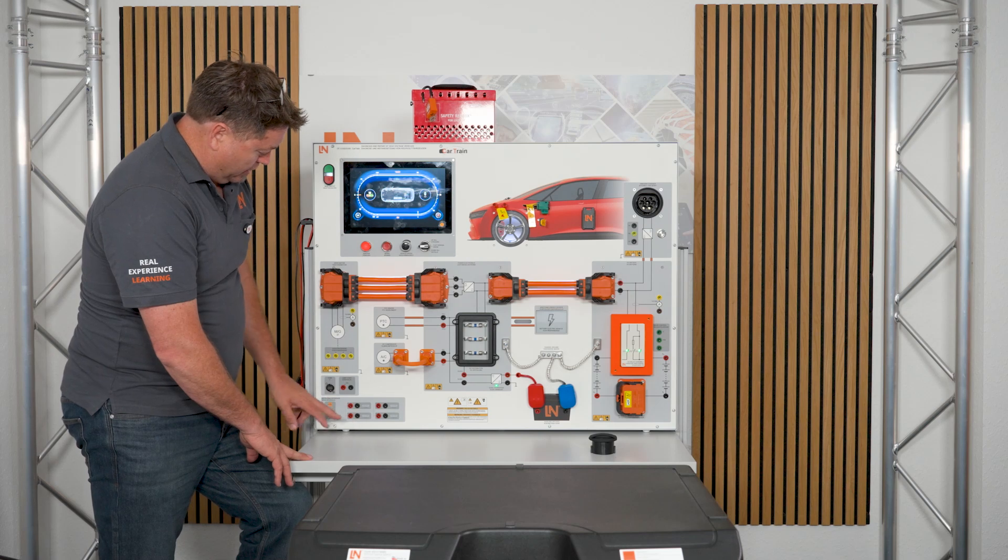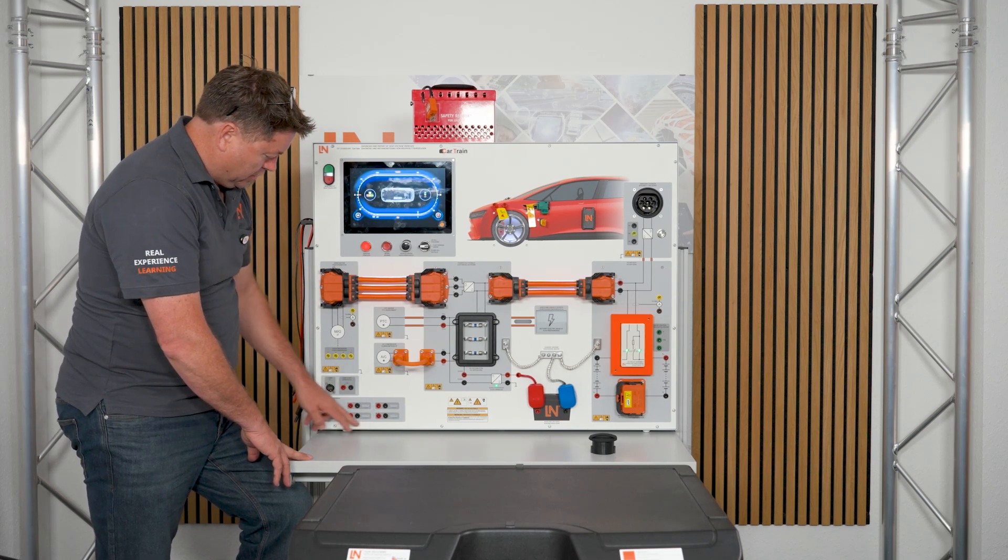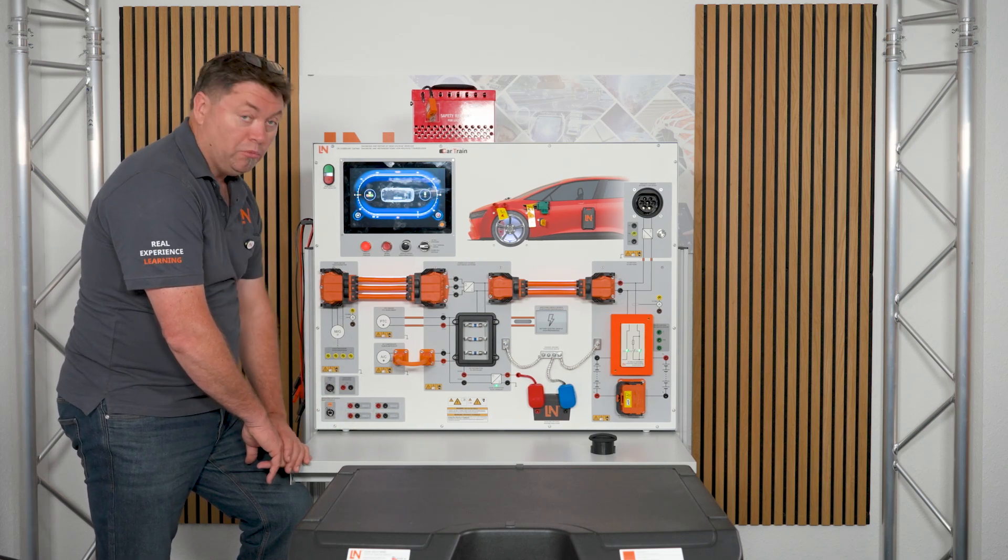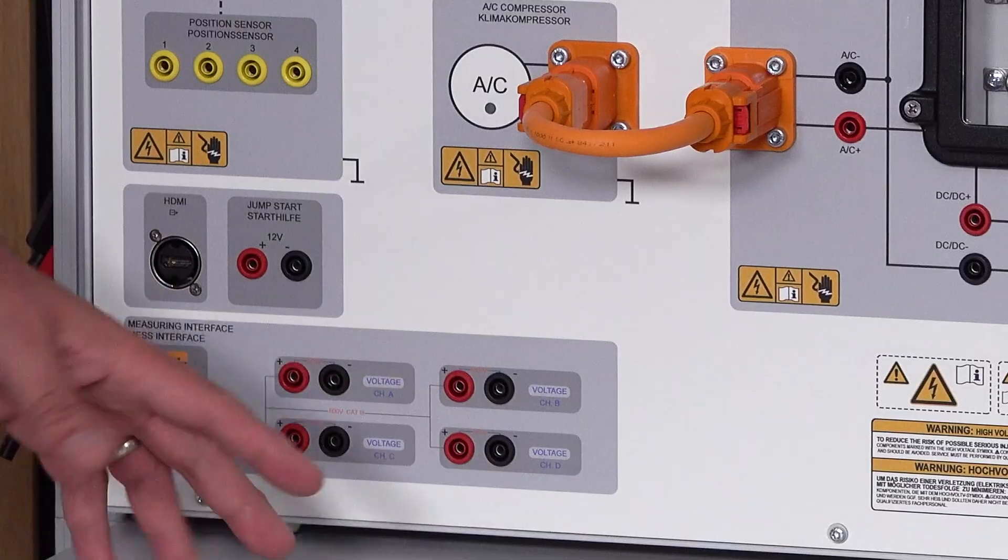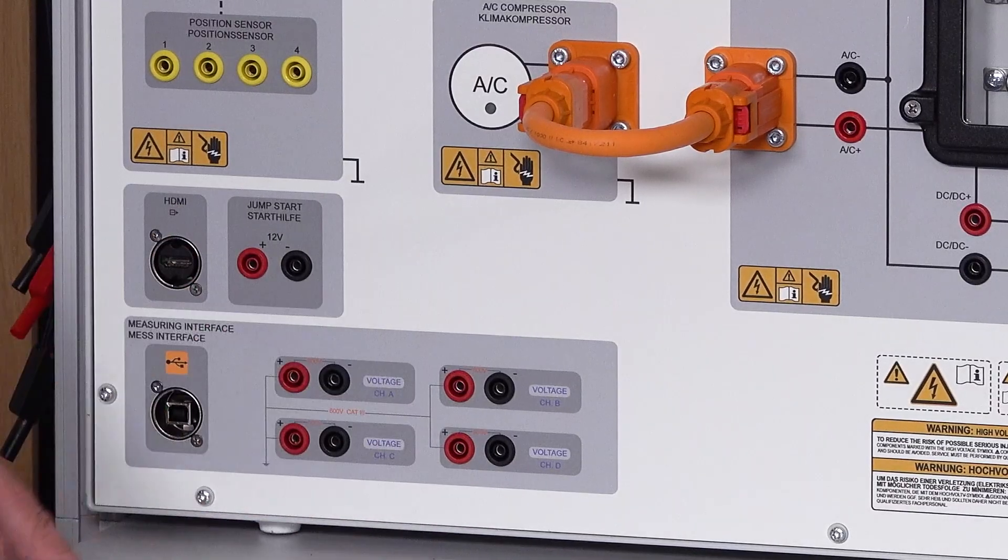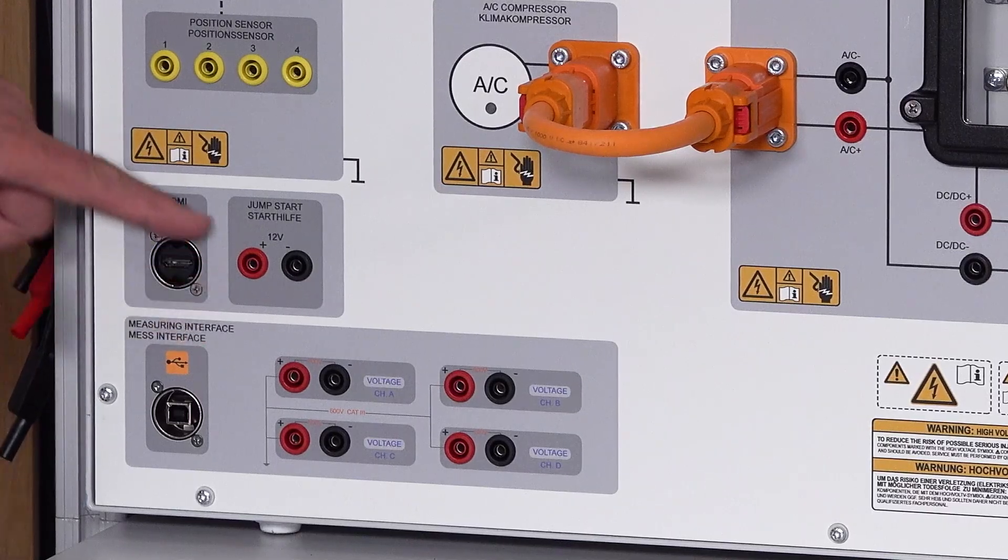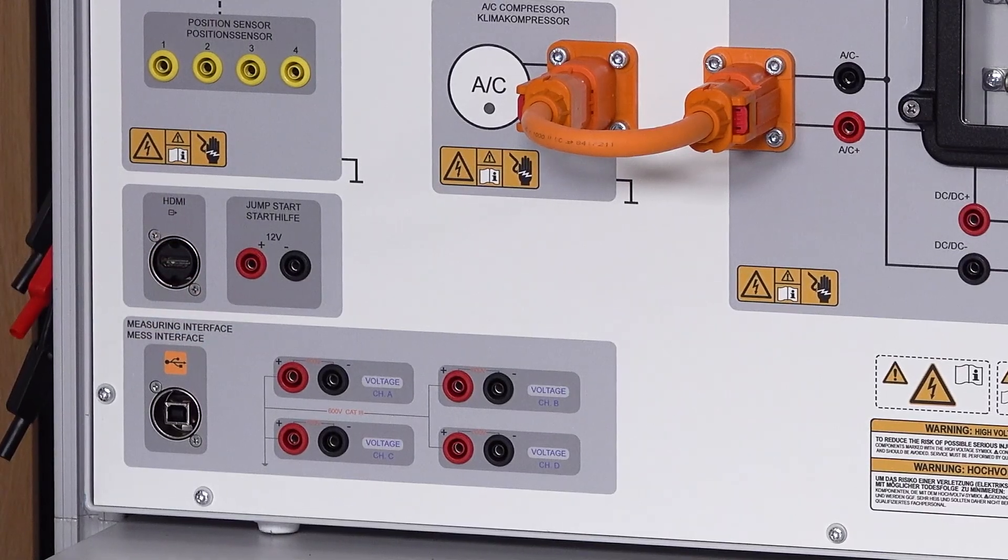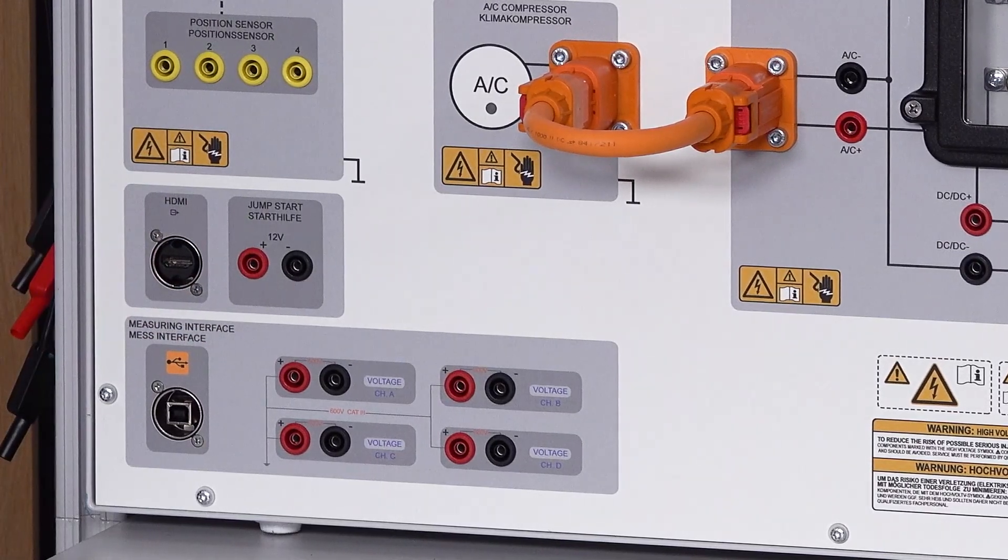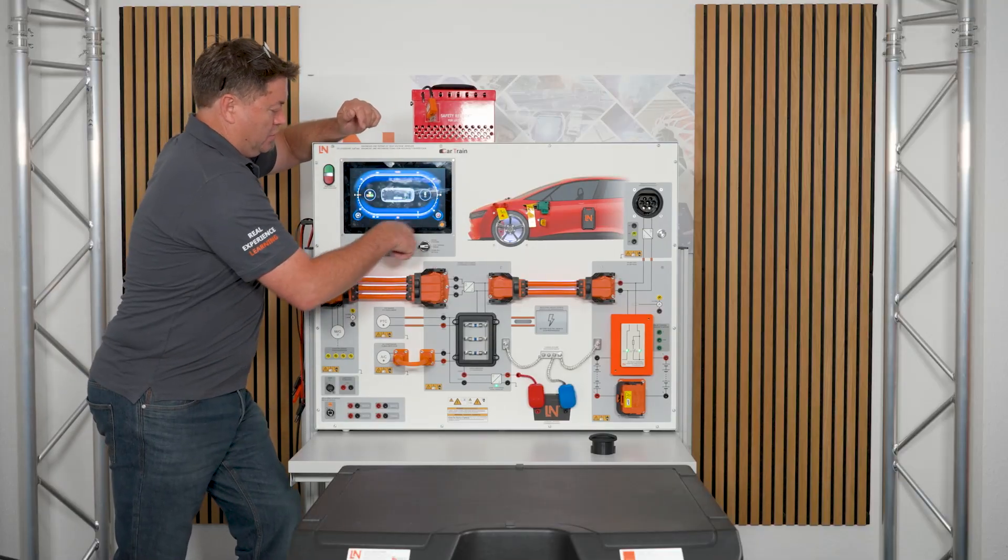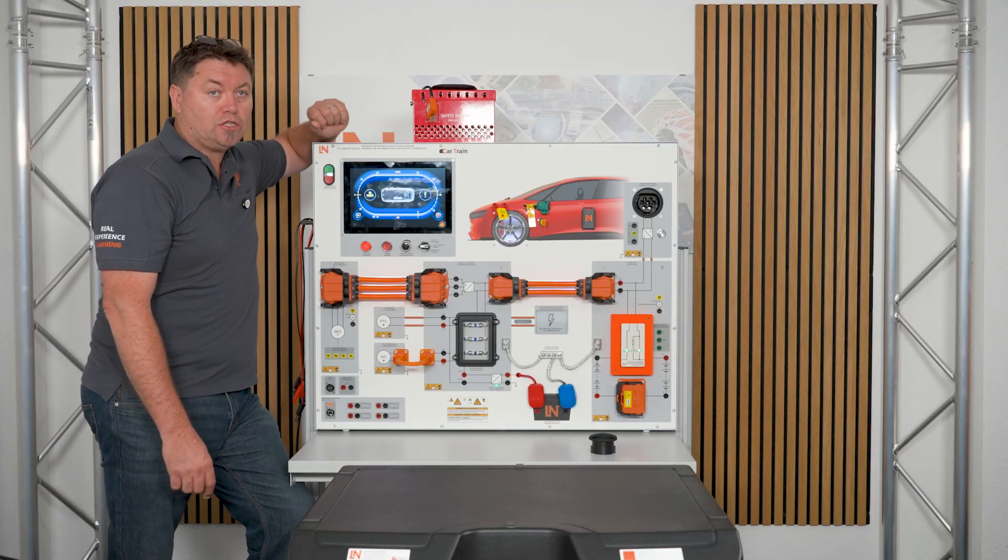We also see here that we have the onboard measuring devices that you're used to from Lucas-Nülle. I've got a four-channel, so mainly used for oscilloscope, but you can also use a voltmeter down there as well. And we've got an HDMI output that we see here, so able to use the display onto a much larger screen.